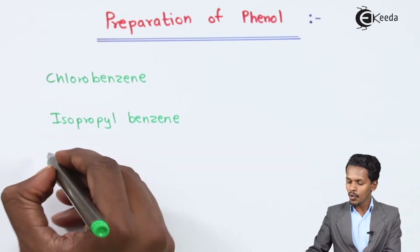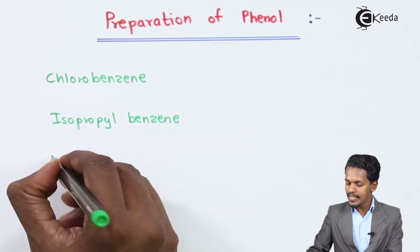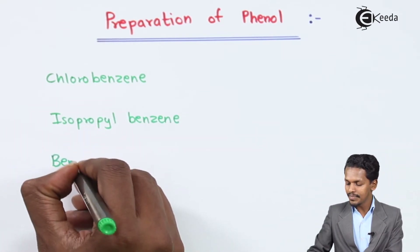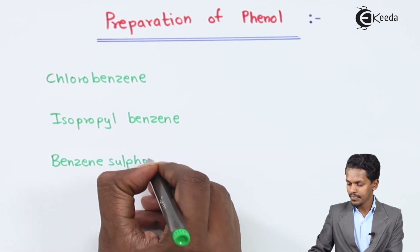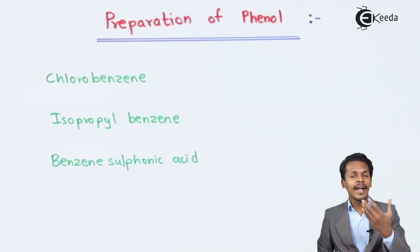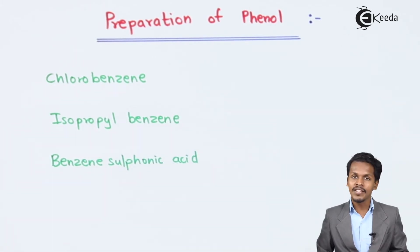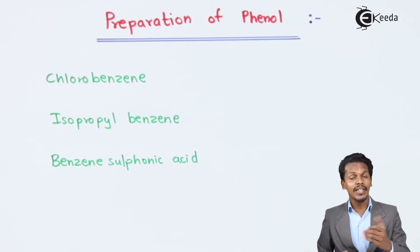We can also obtain phenol from benzene sulfonic acid. On hydrolysis of benzene sulfonic acid, we can obtain phenol.